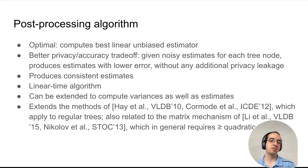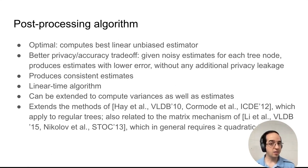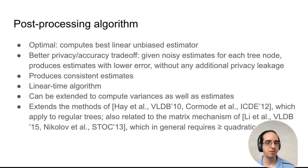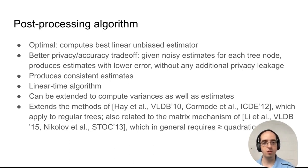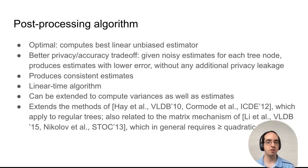We're also getting consistent estimates, so the value of every node will now equal the sum of the values of its children. This is a linear time algorithm, so it's very efficient and can be extended to compute not just the estimates but also the variances of each estimate. This algorithm extends the methods of Haydel and Kormod et al., which apply to regular trees, whereas our method works for arbitrary trees. It's also related to the more general matrix mechanism for differential privacy, which in general requires at least quadratic time.